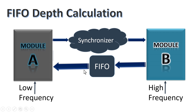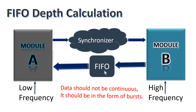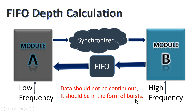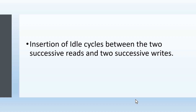In this case, we must place a memory buffer to synchronize module B and module A. However, the data should not be continuous — it must be in the form of bursts. If data is continuous, the buffer will eventually become full and all subsequent data will be lost. Given the frequency of module A, frequency of module B, and the burst size, we can calculate FIFO depth as seen in part 1. In this video, we add one level of complexity: insertion of idle cycles between two successive reads and two successive writes.